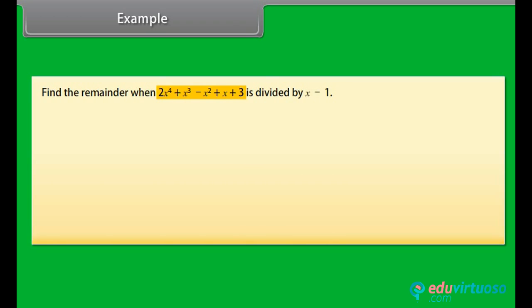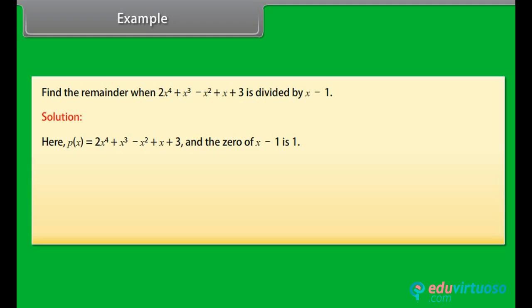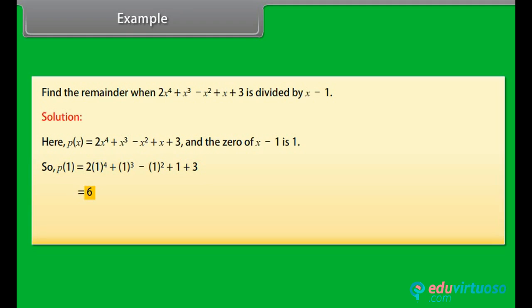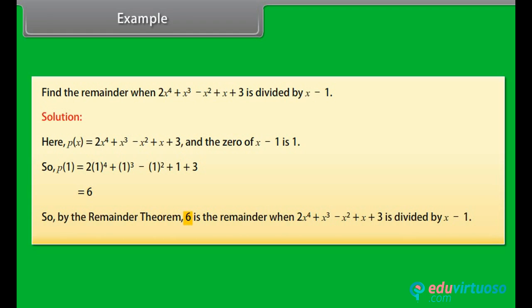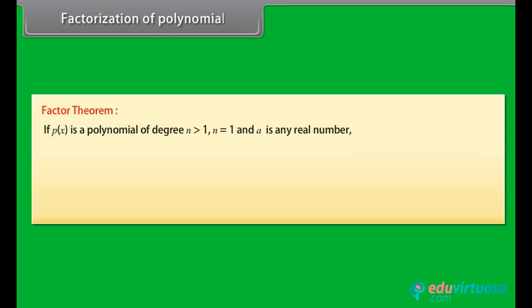Example: Find the remainder when 2x to the power 4 plus x cubed minus x squared plus x plus 3 is divided by x minus 1. Here p(x) = 2x⁴ plus x³ minus x² plus x plus 3, and the zero of x minus 1 is 1. So p(1) = 2(1)⁴ plus (1)³ minus (1)² plus 1 plus 3 = 2 plus 1 minus 1 plus 1 plus 3 = 6. By the remainder theorem, the remainder is 6.